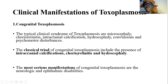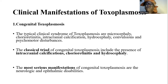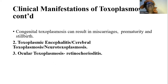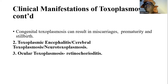Of these clinical manifestations, three important ones are known as the classical triad: hydrocephaly, chorioretinitis, and intracranial calcifications. The more serious manifestations are the neurologic and ophthalmic disabilities. Congenital toxoplasmosis can also result in miscarriages, spontaneous abortion, prematurity, and stillbirth.